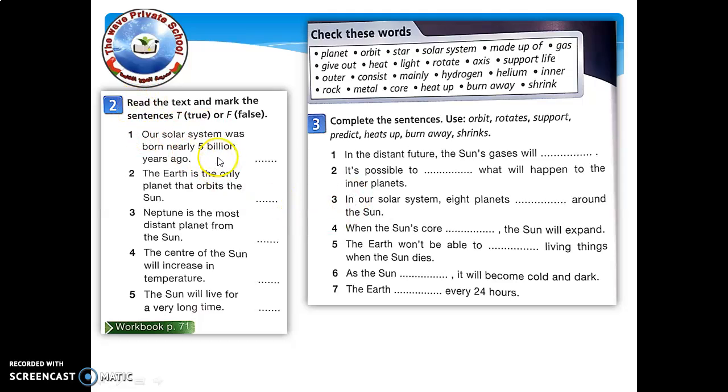Number two activity: I would like you to listen carefully while I read and give you the answers. You have to mark here on the lines T and F, meaning if it's true or if it's false. Number one: our solar system was born nearly five billion years ago. It's true because it's 4.6 billion years ago. Number two: the Earth is the only planet that orbits the Sun. It's false; there are eight of them. Number three: Neptune is the most distant planet from the Sun. Yes, it's true. It's the last away from the Sun. Number four: the center of the Sun will increase in temperature. Yes, according to the text, so it's true.